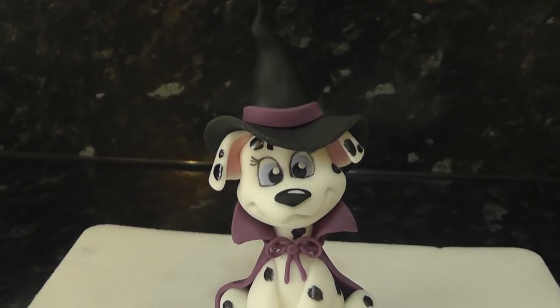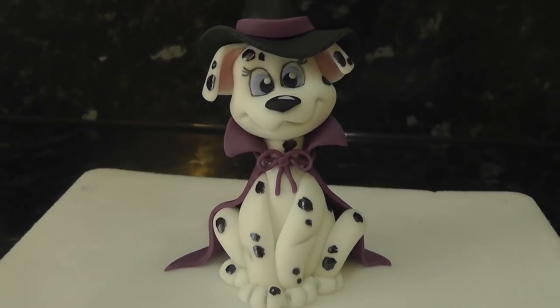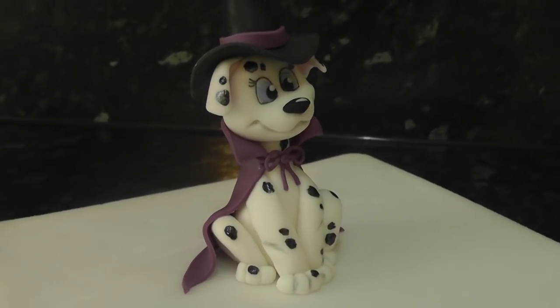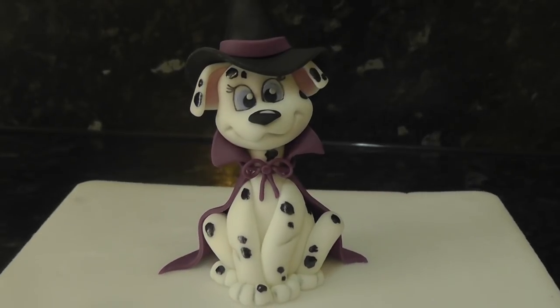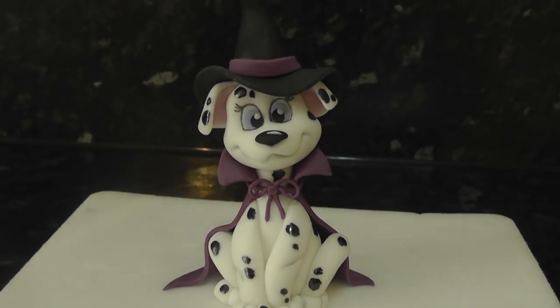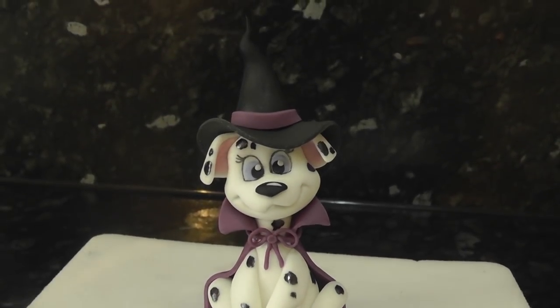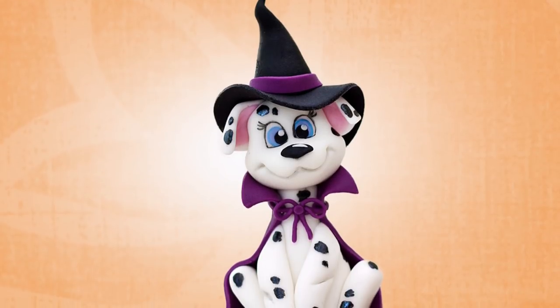And that's it. All done. A cute little puppy cake topper, perfect for a not so scary Halloween cake. Give her a little pumpkin bucket filled with bones, or draw little bones on her cape. Hope you enjoyed this week's tutorial. See you next Tuesday. Bye!